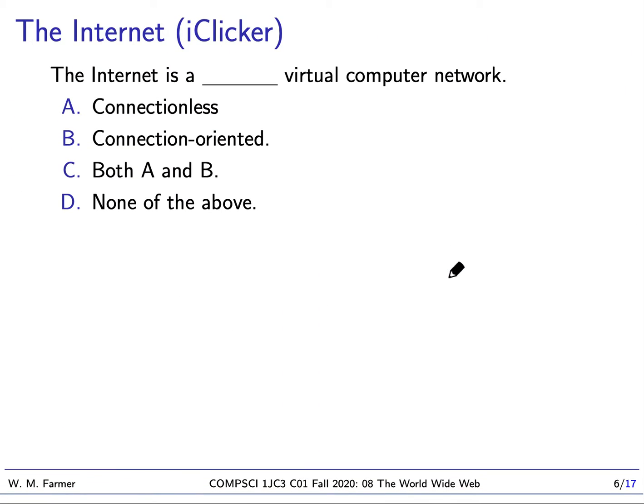Here's a question: the internet is a blank virtual computer network. The choices are connectionless, connection-oriented, both connectionless and connection-oriented, or none of the above. The answer is both A and B, depending on what layer of the internet you're looking at.